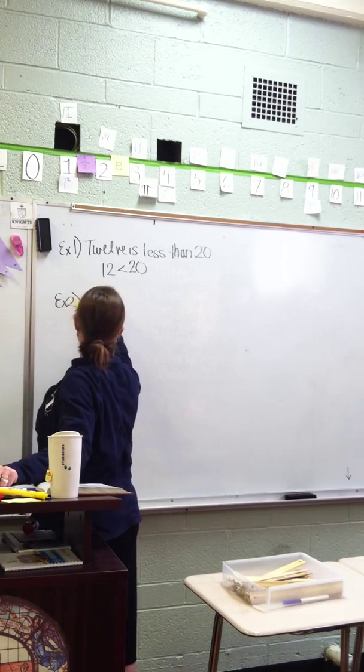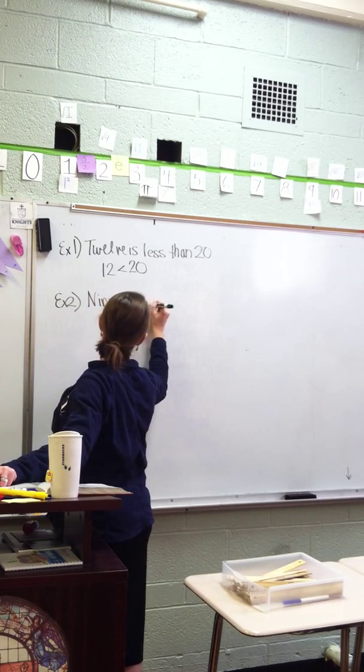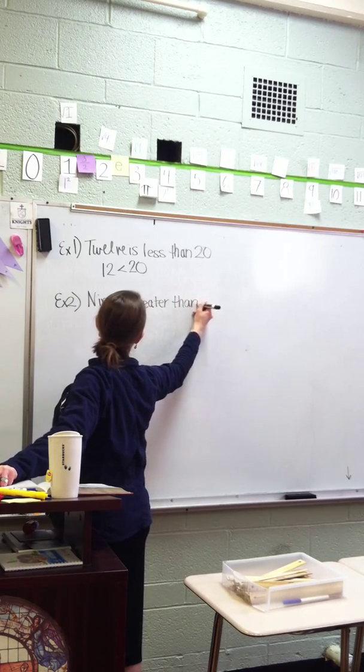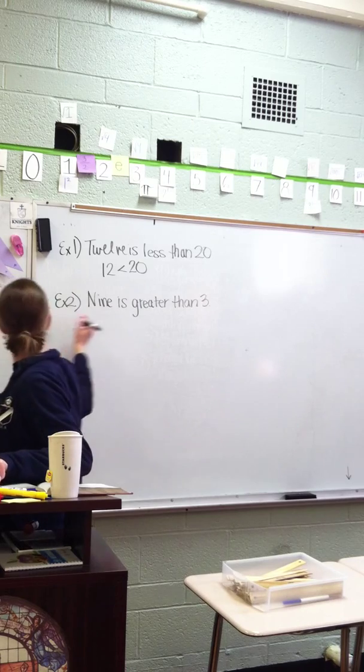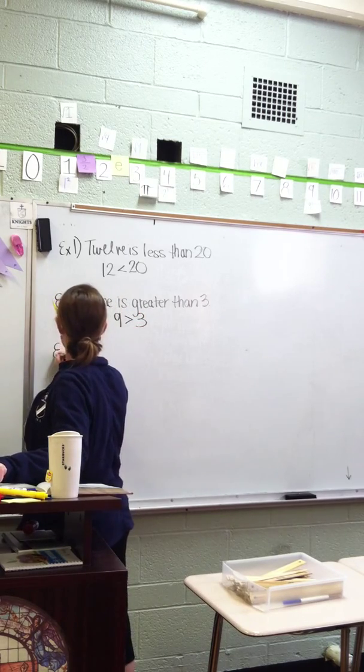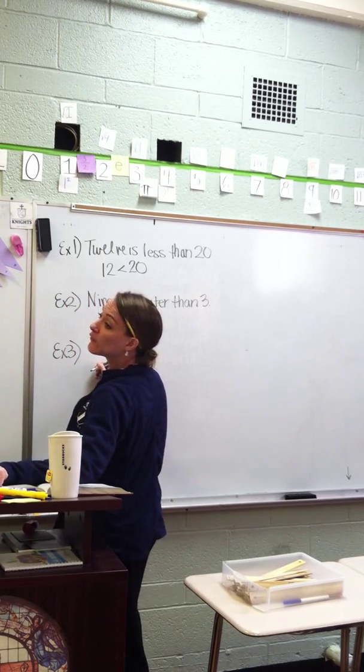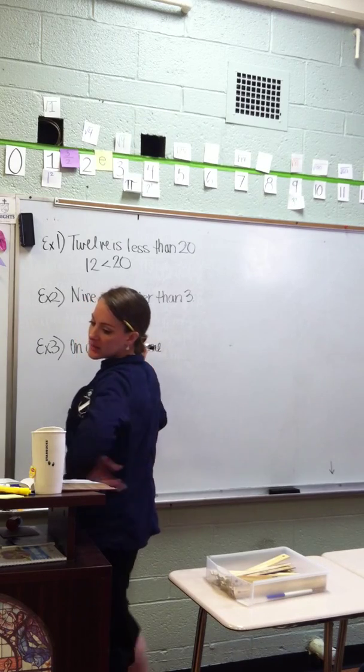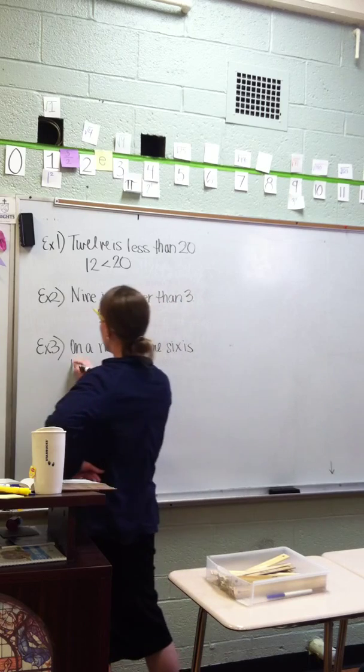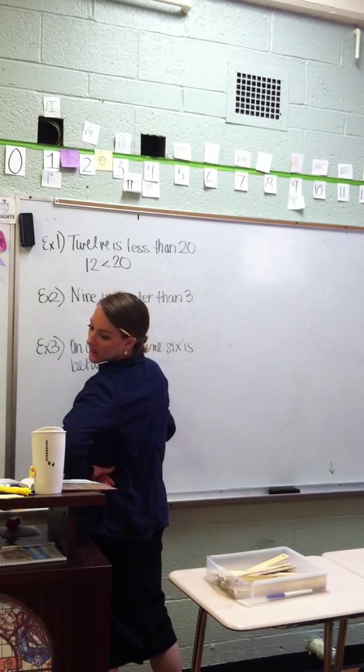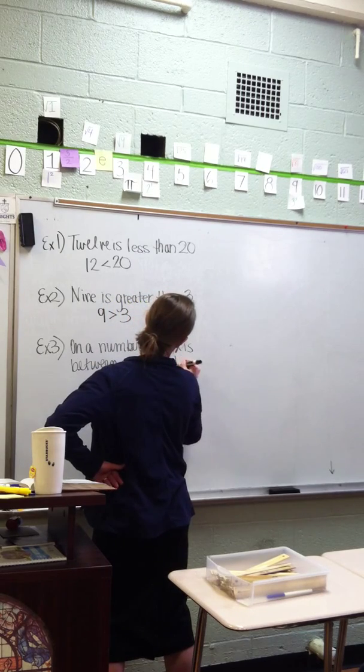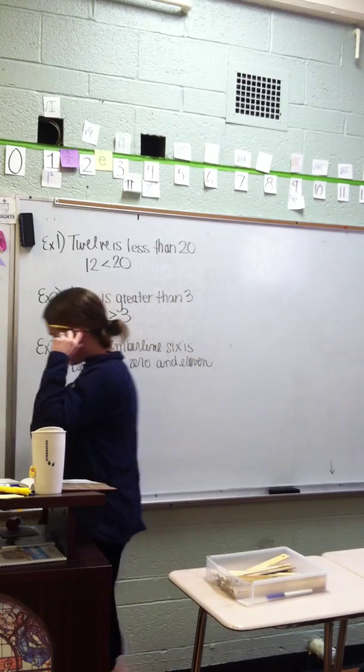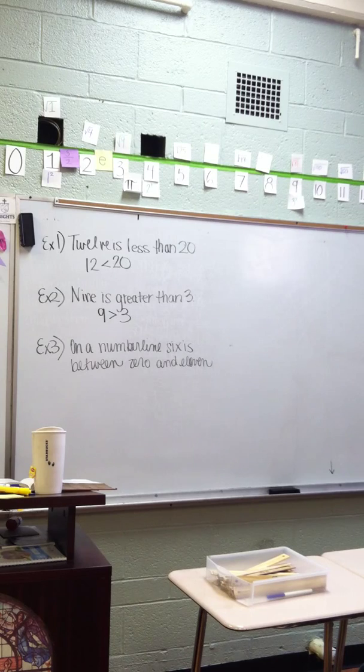Alright. Number twelve. And then less than symbol. Okay. And twenty. Alright. Twelve is less than twenty. That's easy. Easy. Example two. Nine is greater than three. Sophie. Nine. And then the greater on the sign. Nine greater than three.